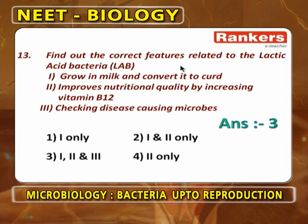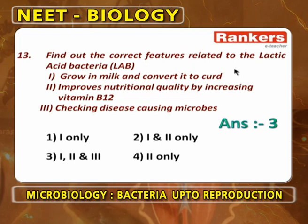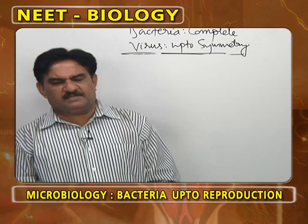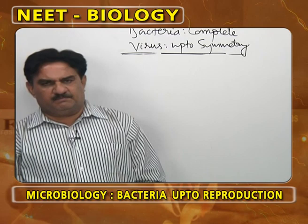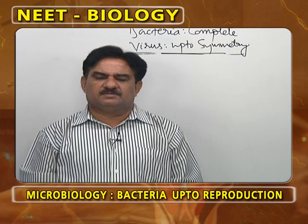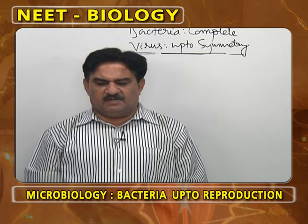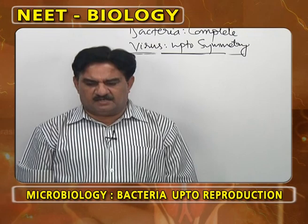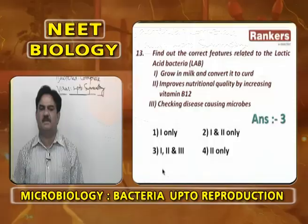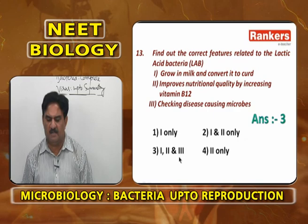Find the correct features related to lactic acid bacteria (LAB): They grow in milk and convert it into curd — correct. They improve nutritional quality by increasing vitamin B12 (cyanocobalamine) — correct. They also check or control disease-causing microbes — correct. So all three features are correct; answer is option 3 (1, 2 and 3).